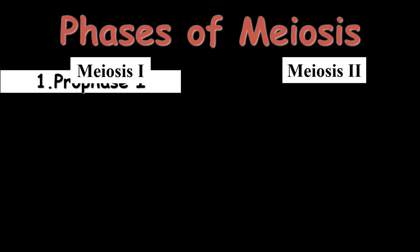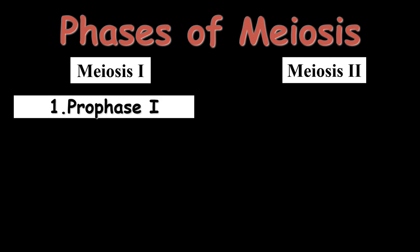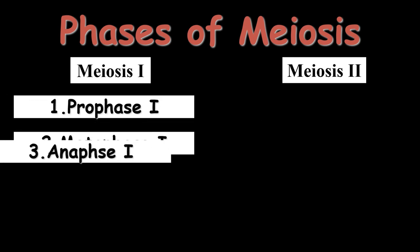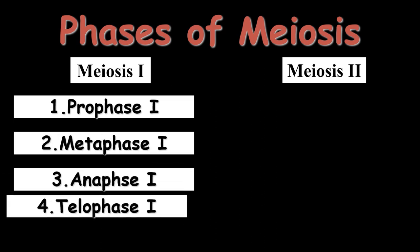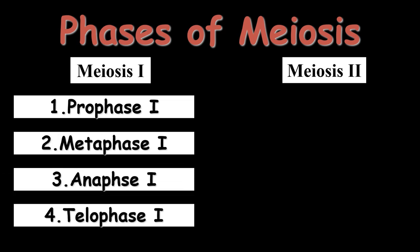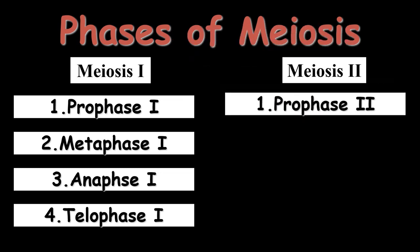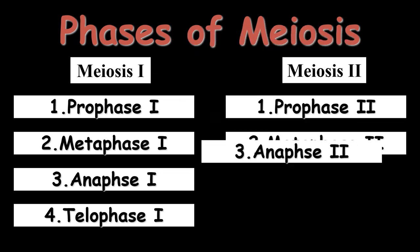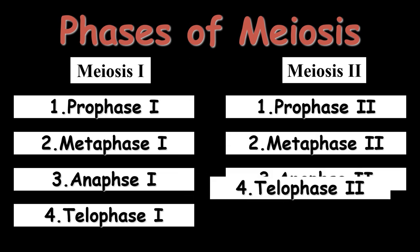Meiosis is divided into two stages — Meiosis I and Meiosis II — each with further phases. Meiosis I includes Prophase I, Metaphase I, Anaphase I, and Telophase I. Meiosis II includes Prophase II, Metaphase II, Anaphase II, and Telophase II.